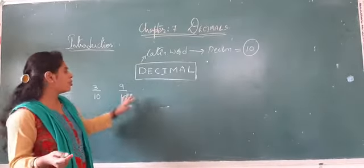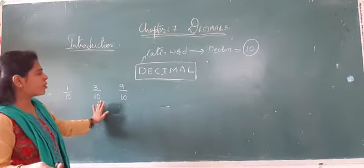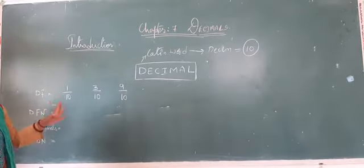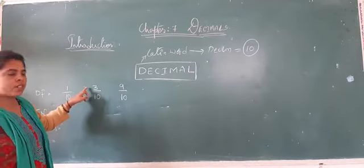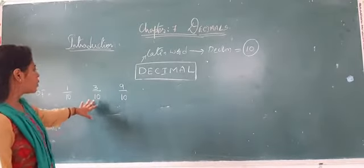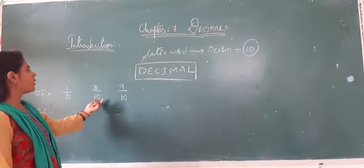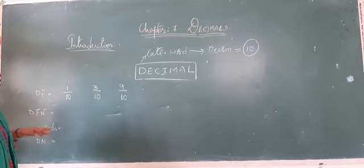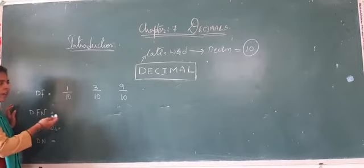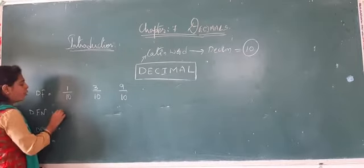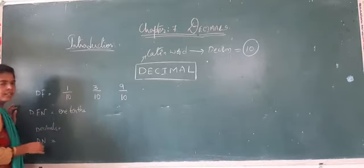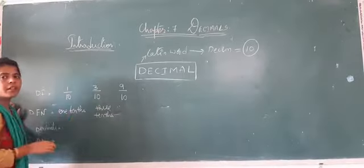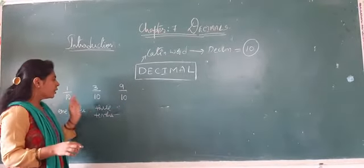Before inserting into the tables, you should know the names. The fractions 1 by 10, 3 by 10, and 9 by 10 are called decimal fractions because we have a denominator rounded to 10. These decimal fractions are read as: 1 by 10 is 'one tenth,' 3 by 10 is 'three tenths.' The 'ths' is added — tenths, hundredths, thousandths.